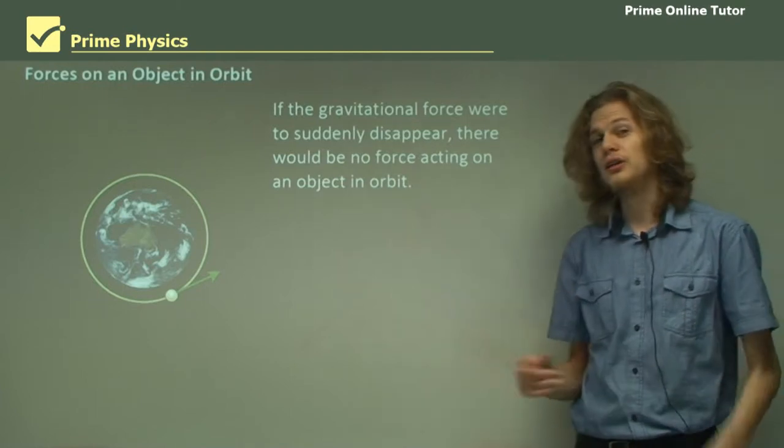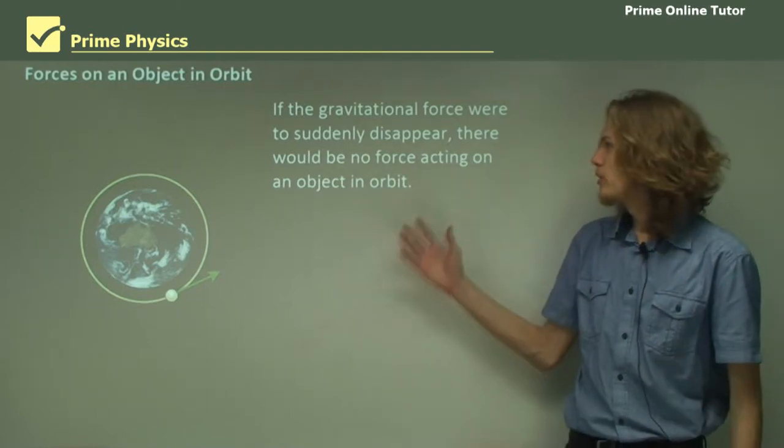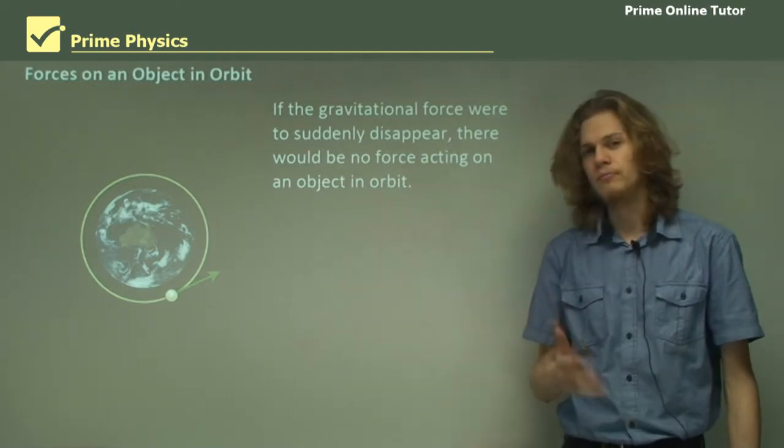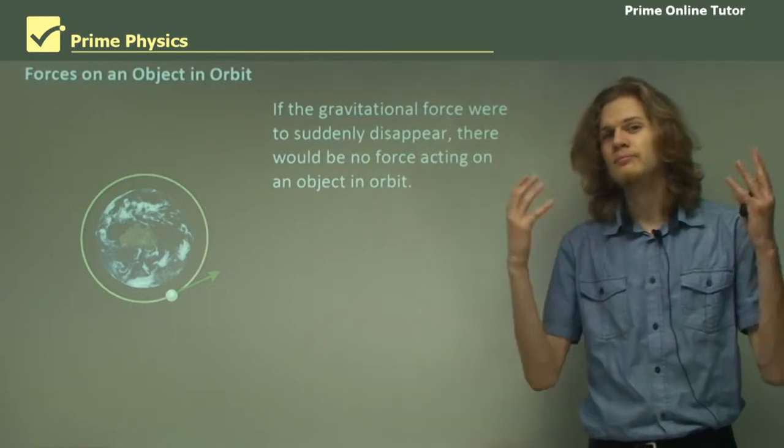Now if the gravitational force suddenly disappeared we know that there will be no force acting on the object and so it will travel in a straight line.